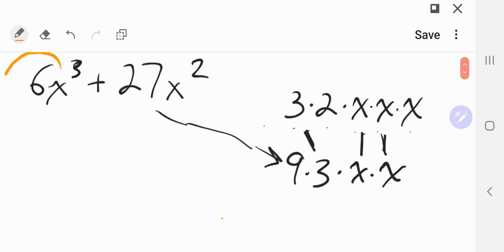We can pull out those ingredients from these two things and park them in the front. So we said there was a 3 in both, and an x, and an x. So 3 times x times x is 3x squared. Those got pulled to the front.